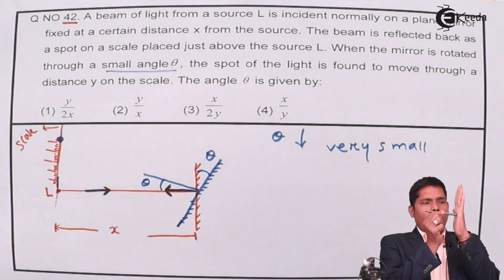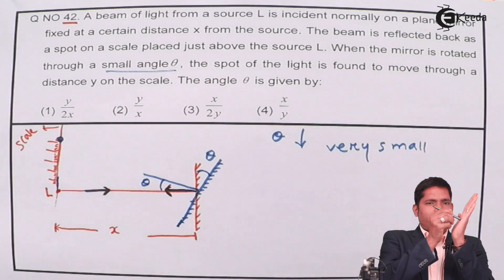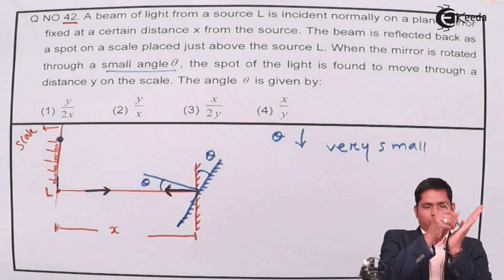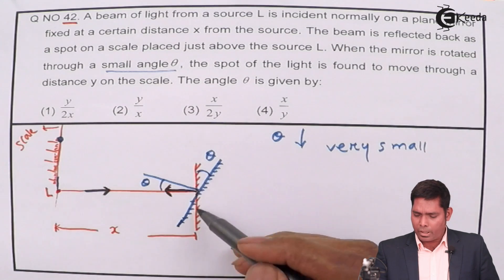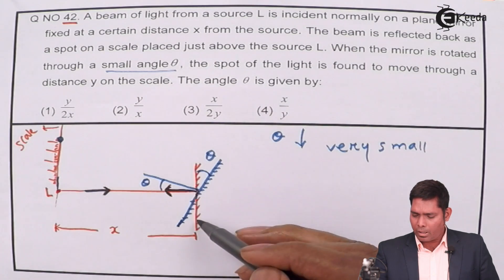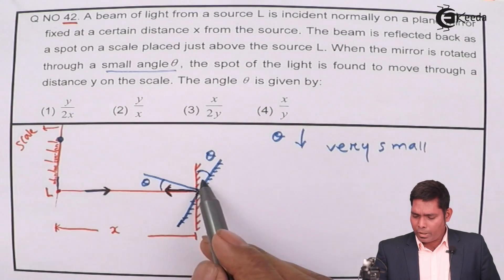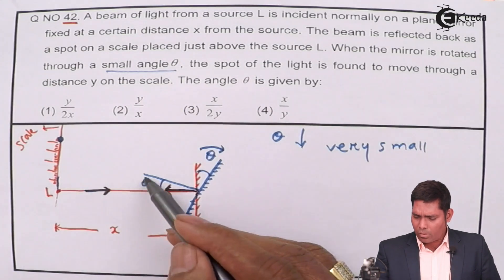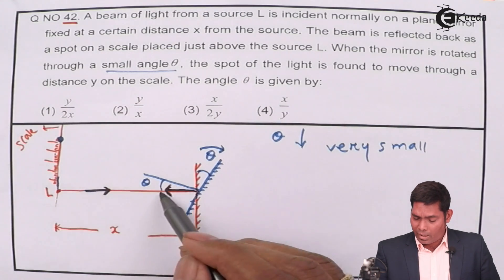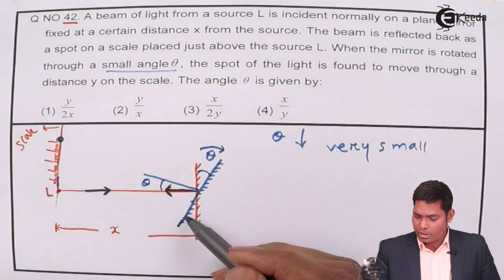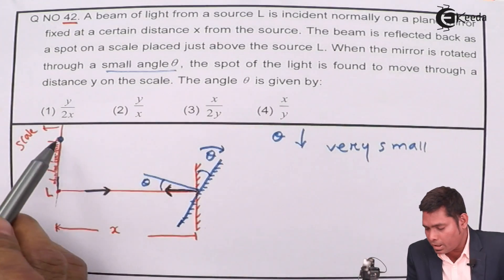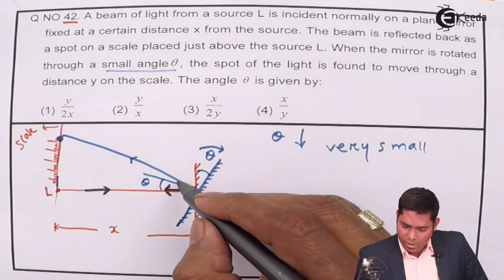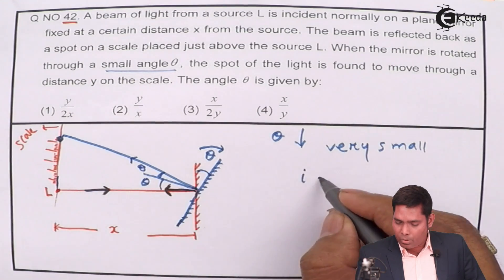If this is the mirror and this is the normal — if the mirror rotates by theta, then the normal also rotates by theta because it is attached to it. In the initial situation the mirror and ray were at 90 degrees (normal incidence). When the mirror rotates by theta, the normal also rotates by theta, so the incident ray makes an angle theta with the normal. The ray will get reflected making angle theta on the other side.